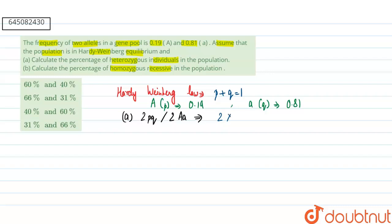According to this condition, when we keep the values, 2 into 0.19 and 0.81, it will equal 0.307. And when we convert this value to percentage, it will be almost equal to 30.7% or we can say 31%. Now if we are talking about our second one, that is homozygous recessive condition.